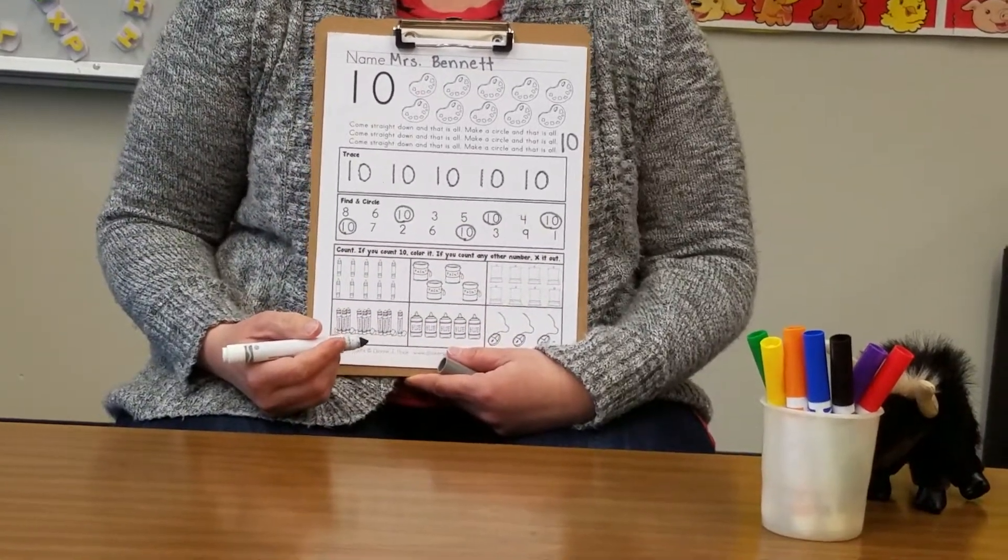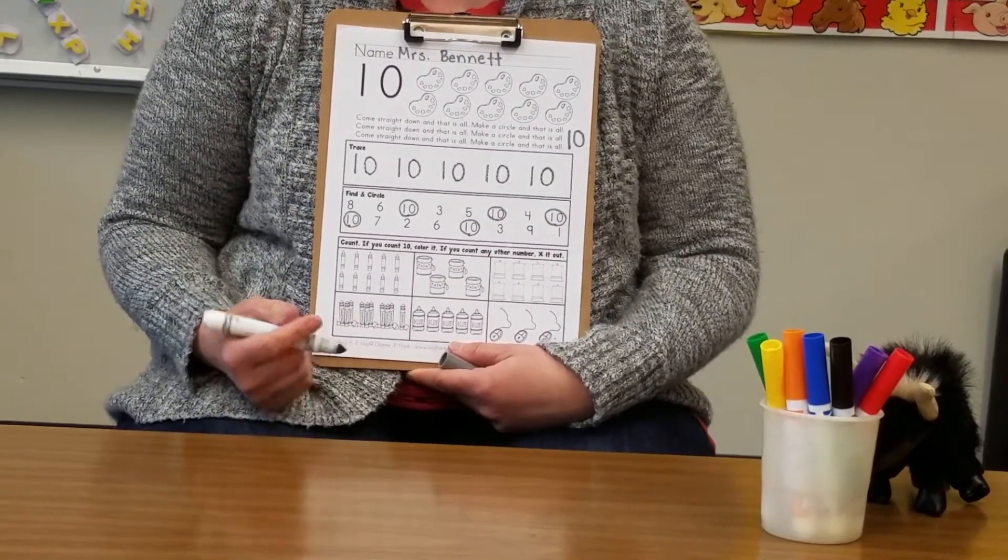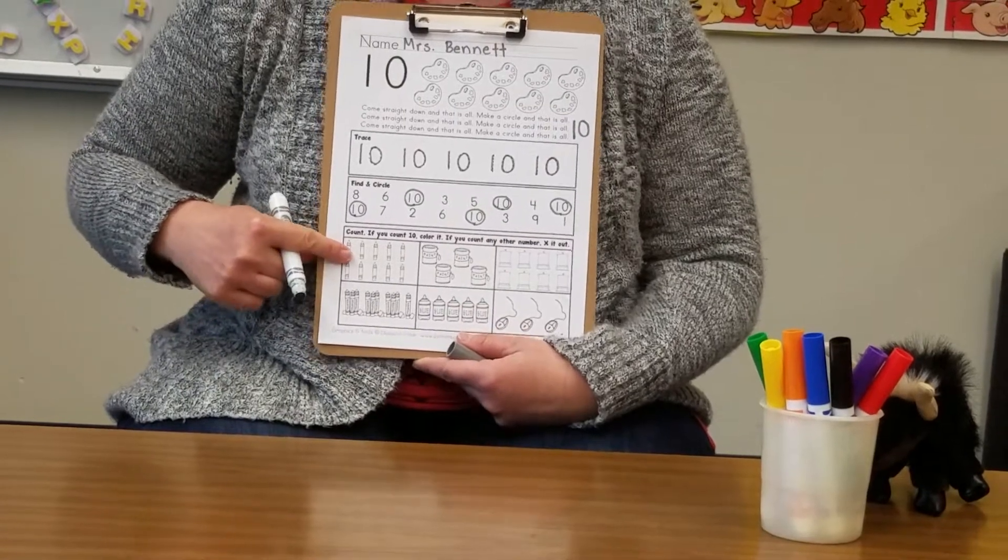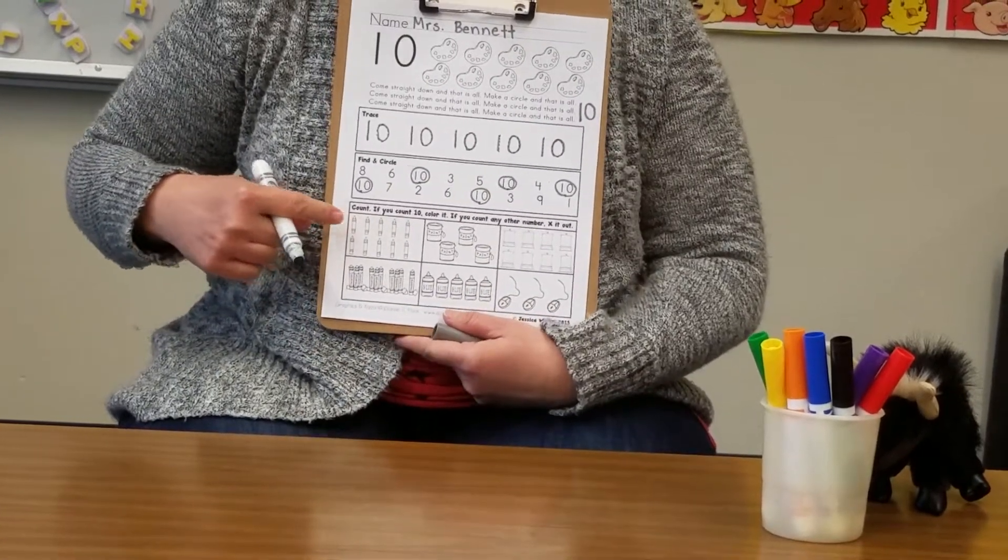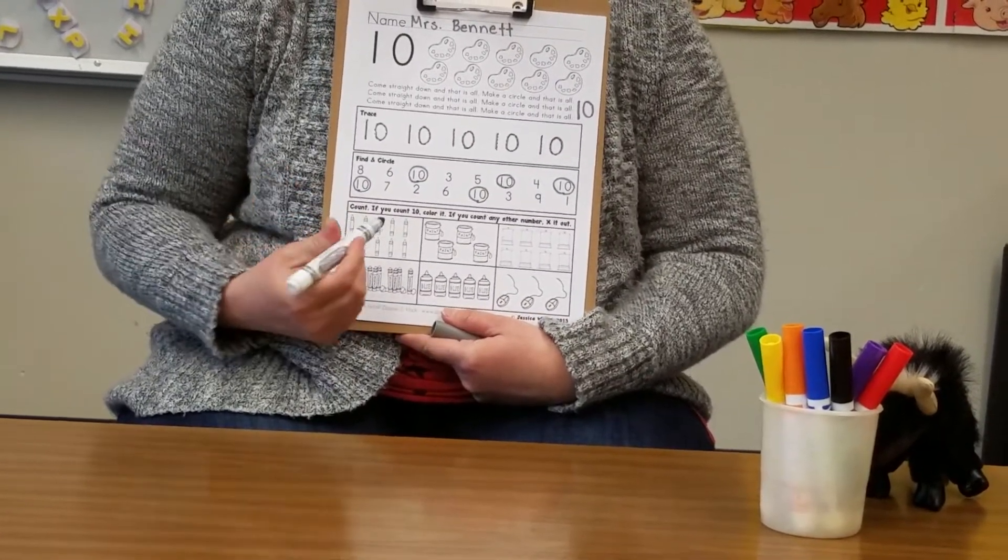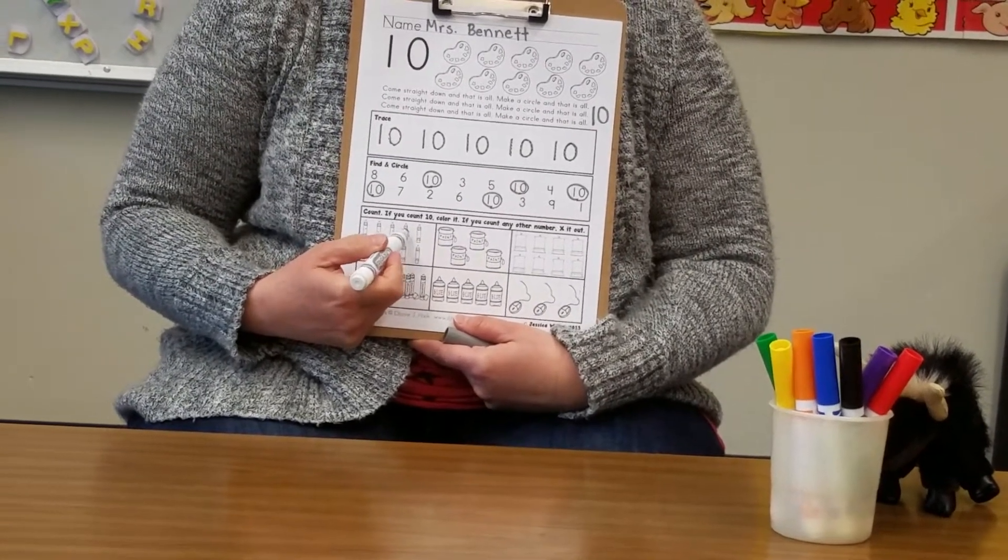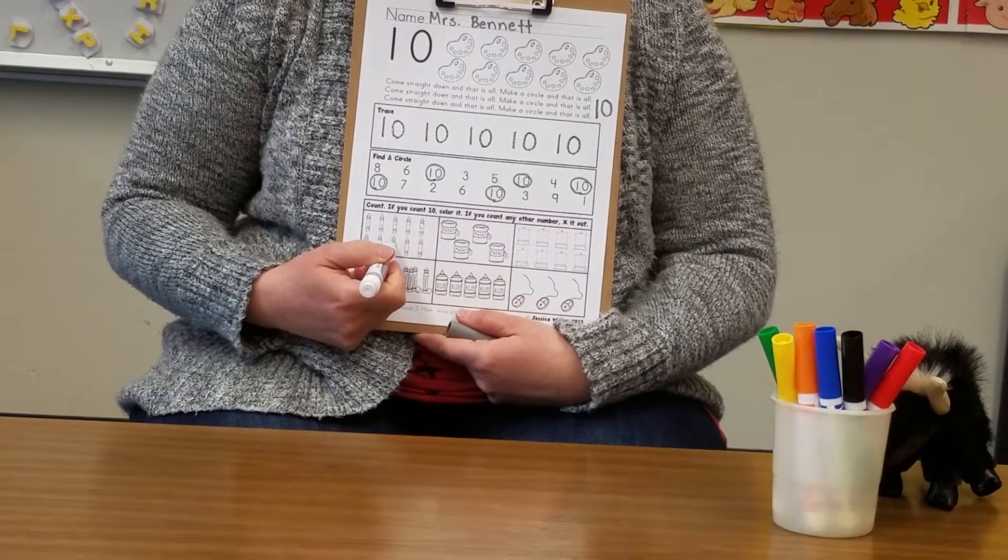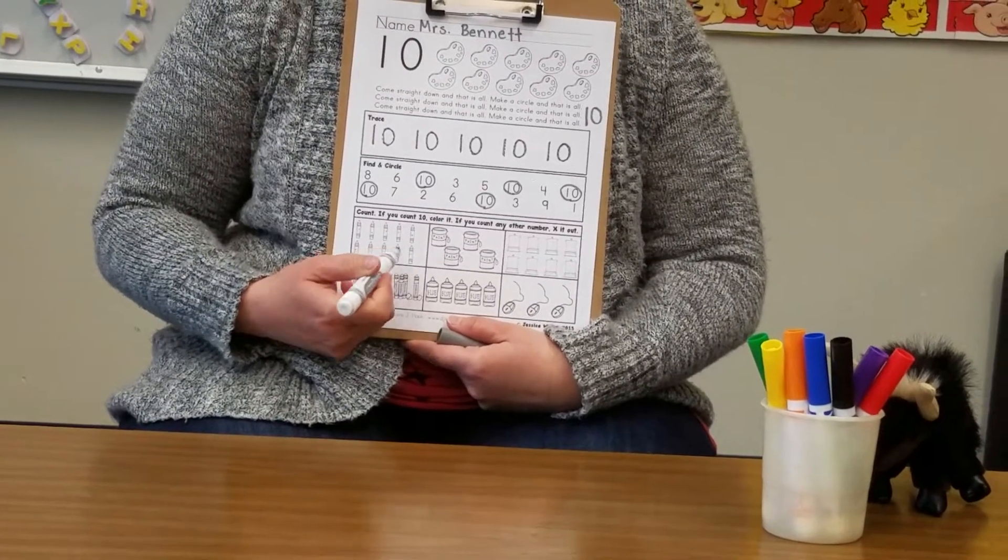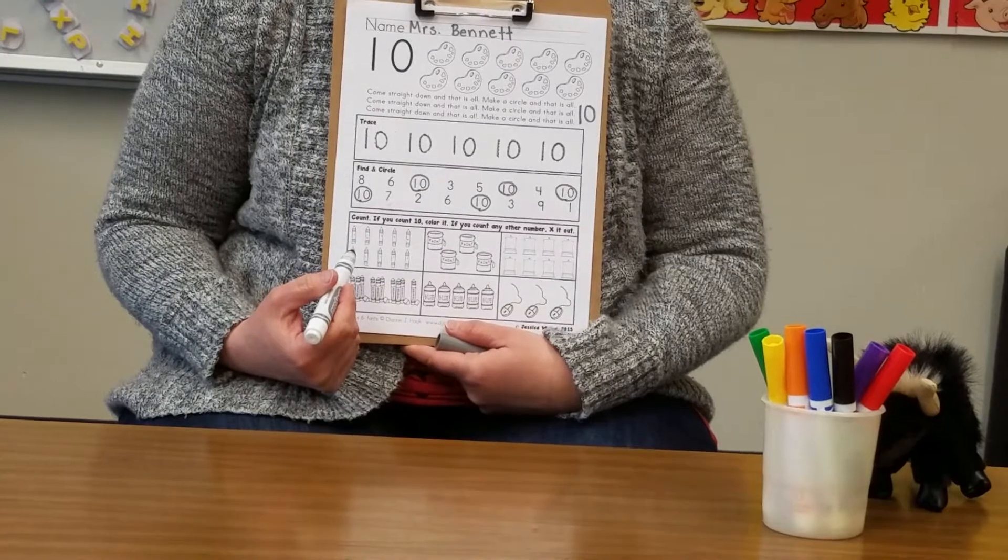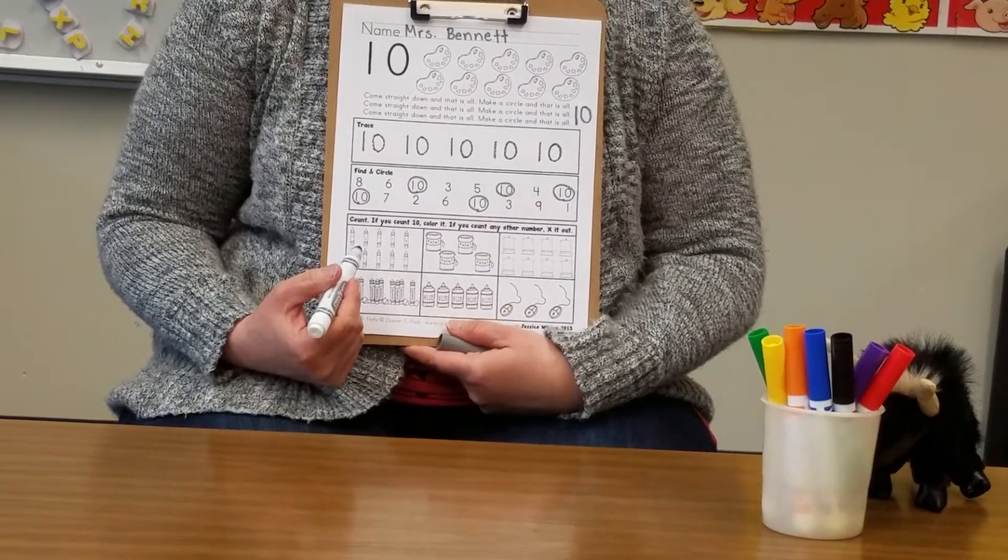Once you've circled all the number 10s then we're ready to move on to the next part and count some items down here in our boxes. So we're going to start with these crayons. Let's count them. 1, 2, 3, 4, 5, 6, 7, 8, 9, 10. So we're going to come back later and color that one.